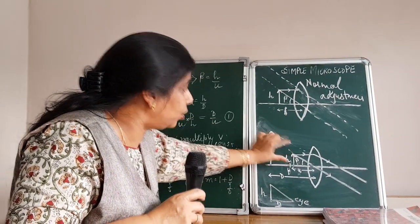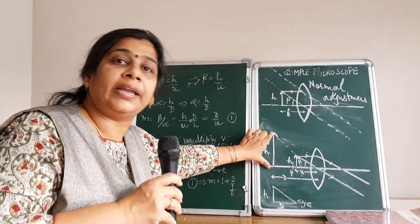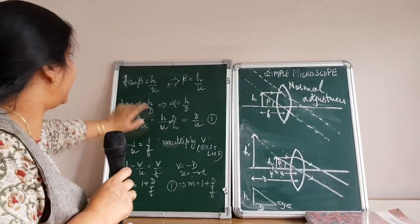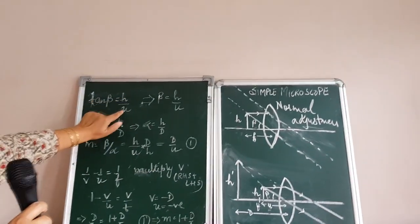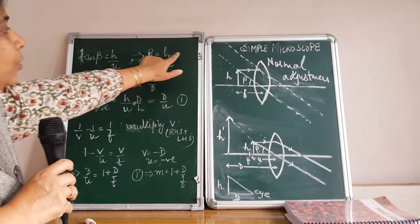Beta can be taken for height H also and beta can be taken for height H dash also. What do I get? Tan beta is equal to H by U, implies beta equal to H by U.